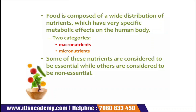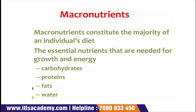There are two categories of nutrients: the first is macronutrients and the second is micronutrients. Some of these nutrients are considered essential while others are non-essential. As we know, nutrients are categorized into these two categories, further divided into essential and non-essential nutrients. We will discuss essential and non-essential in the later part, but first let us understand what macronutrients are.